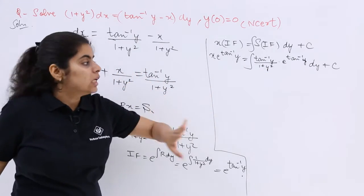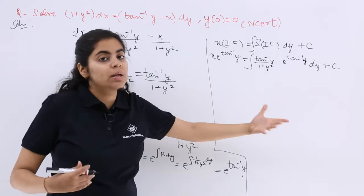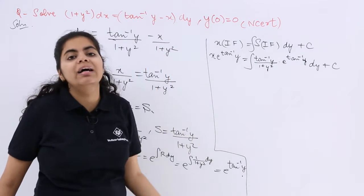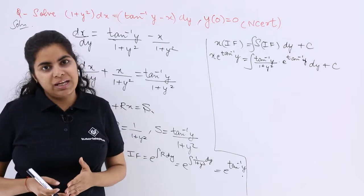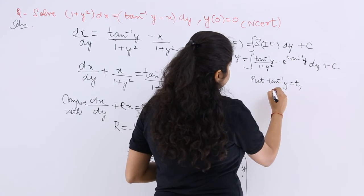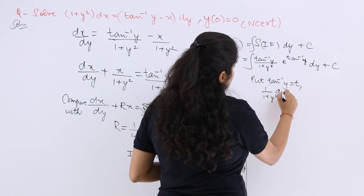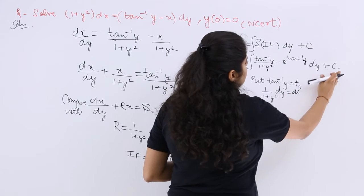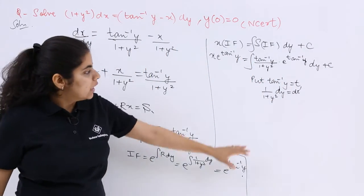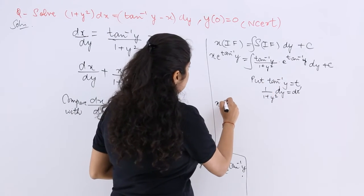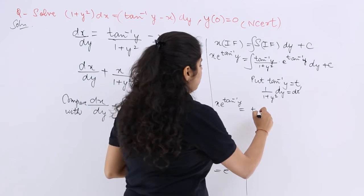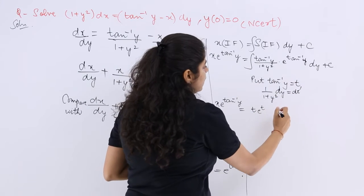Now, tan⁻¹y is very apt to substitute as t, because here there is tan⁻¹y and also 1/(1 + y²), which is the derivative of tan⁻¹y. So put tan⁻¹y = t, then 1/(1 + y²) dy = dt. So x × e^(tan⁻¹y) = ∫t · e^t dt + c.